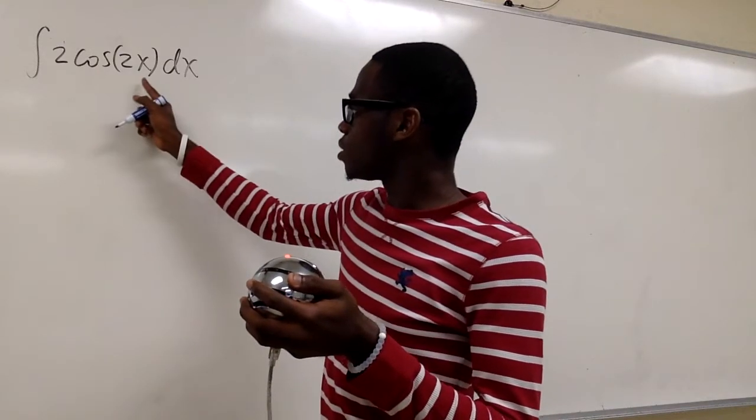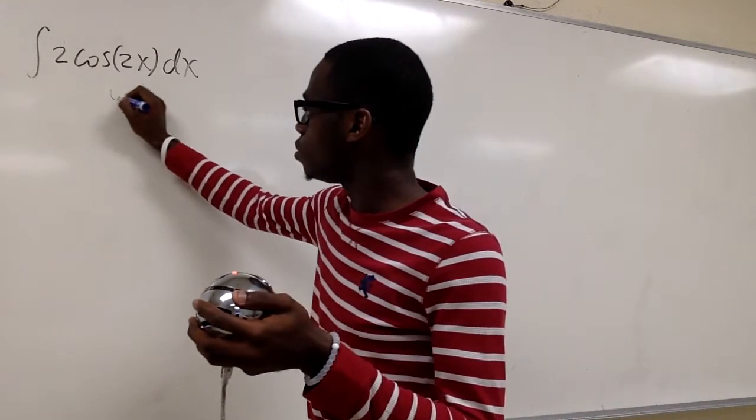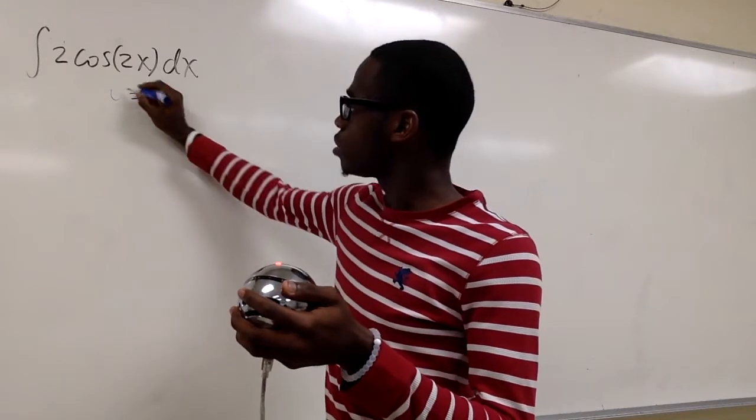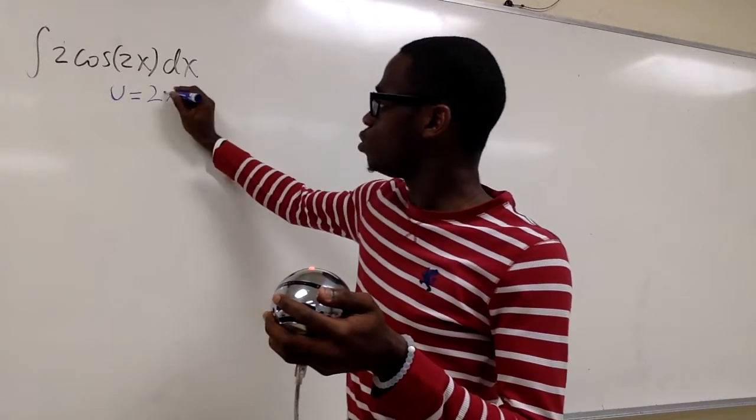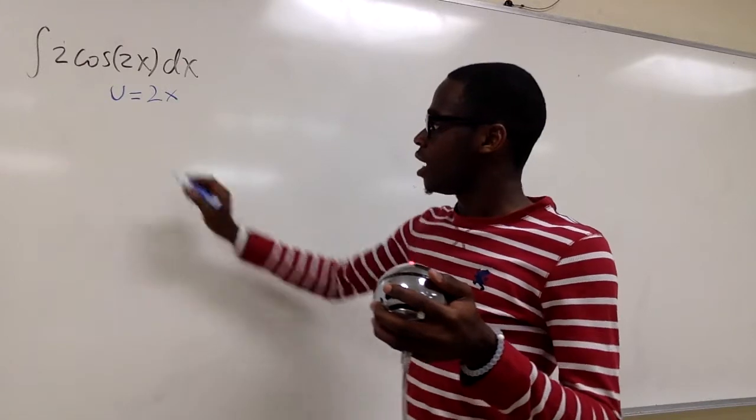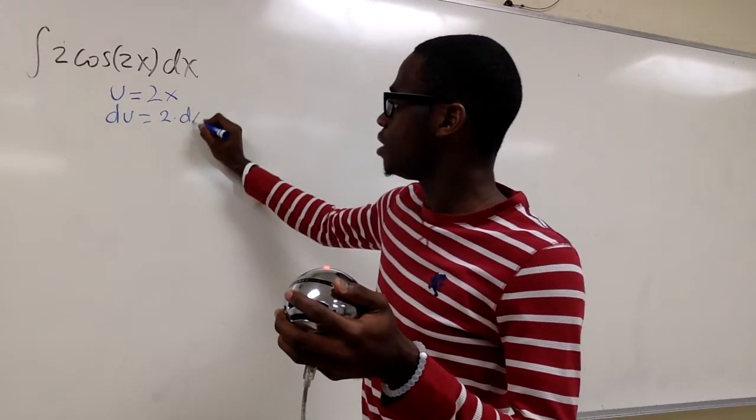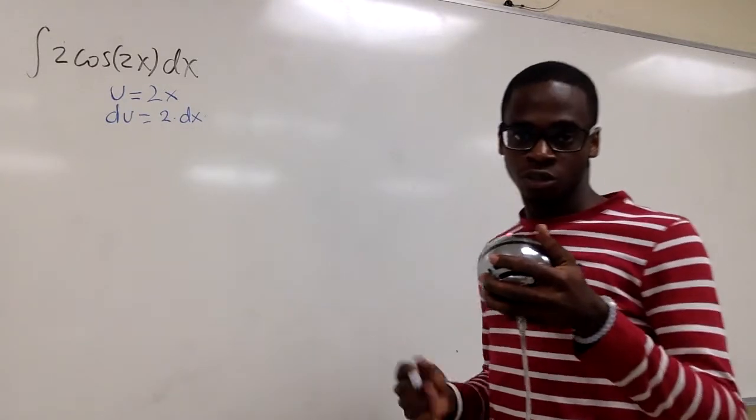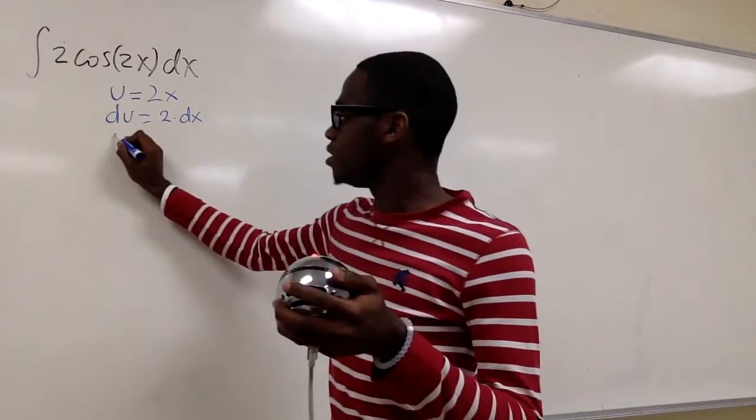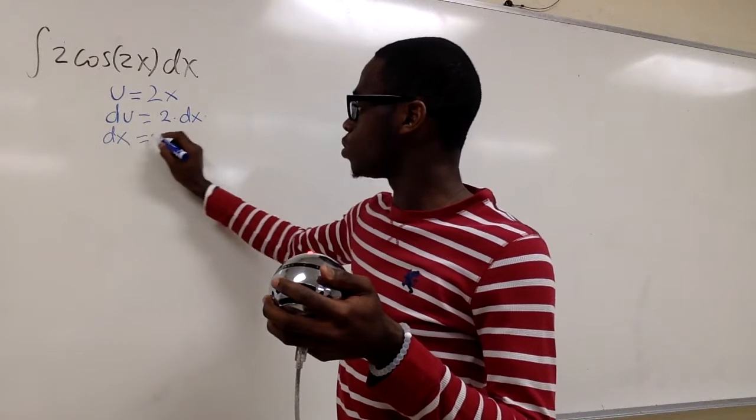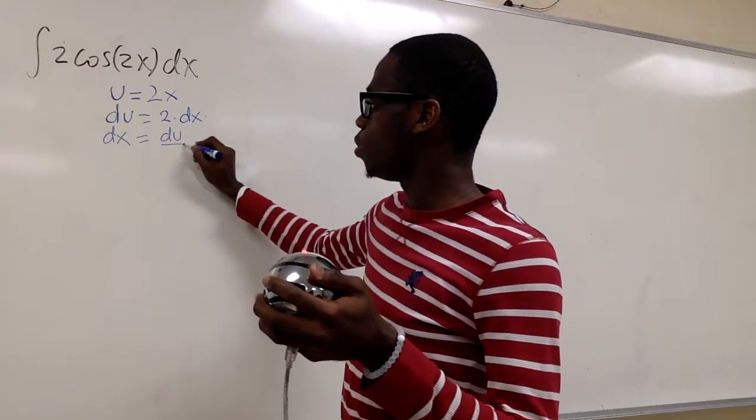u is usually what's in the inside function, so we set u equals 2x. And du will be equal to 2 times dx. And now we want to solve for dx. dx will be equal to du over 2.